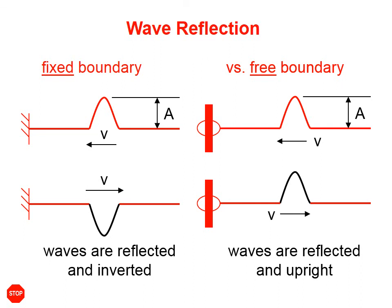So when a fixed boundary is present, waves are reflected and they're inverted. When free boundaries are present, waves are reflected again, but they're upright.